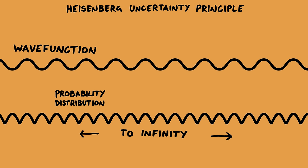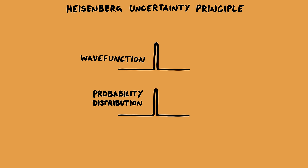Okay, let's do the opposite. Let's make a wave that has only one position. Now we know exactly where the electron is. But what's the wavelength of this wave? Now the wavelength is very uncertain.